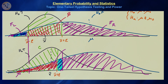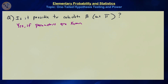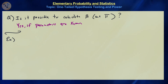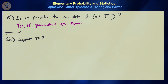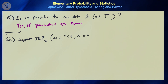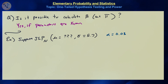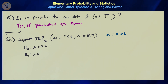Is it possible to actually calculate the value of Type II error beta and statistical power pi? The answer is yes, as long as the parameters of the distribution are known. For example: suppose the population is normally distributed and sigma is known to be 5.7, alpha is 0.08 (chosen slightly higher than 5% to keep beta small), and the null hypothesis is mu equals 52 with a two-sided alternative mu does not equal 52.